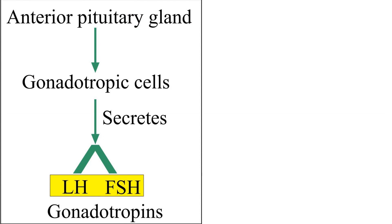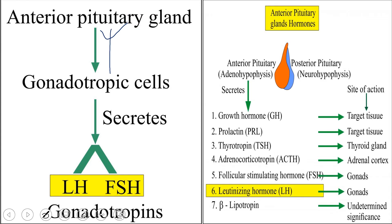In the anterior pituitary gland, gonadotropic cells regulate LH and FSH. The message comes to these anterior pituitary cells from the hypothalamus, mediated by GnRH. GnRH works on these cells and stimulates them to release FSH and LH.